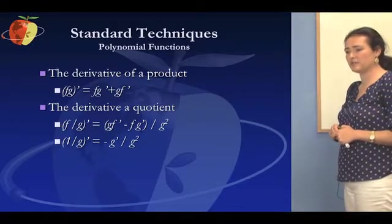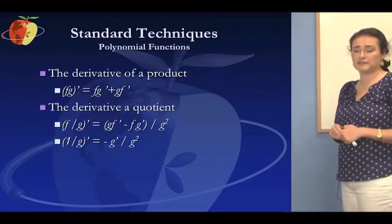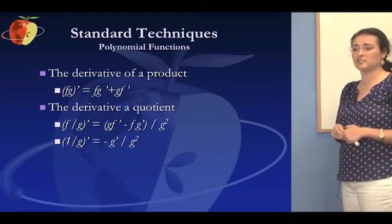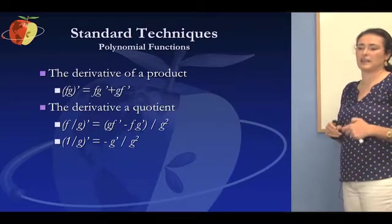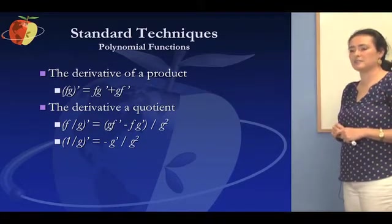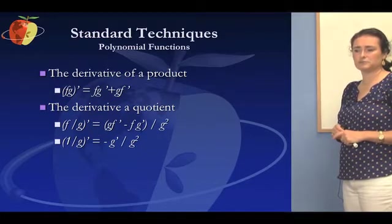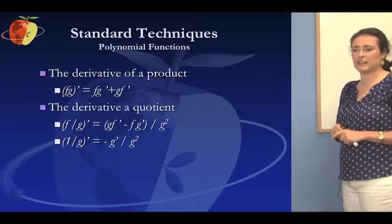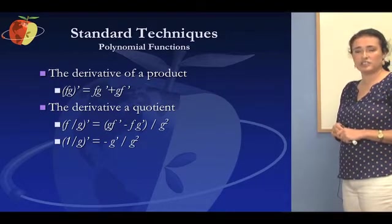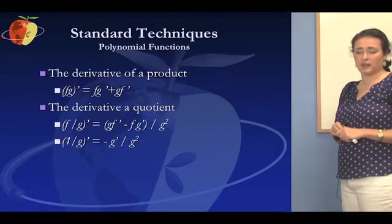If I'm asked to do the derivative of a product, the product of f times g, I would do f times the derivative of g plus g times the derivative of f. It's like the first function as it is times the derivative of the second plus the second function as it is times the derivative of the first. Or if I want to do a quotient, let's say I want to do the quotient of f divided by g, I would do g times the derivative of f minus f times the derivative of g divided by g².